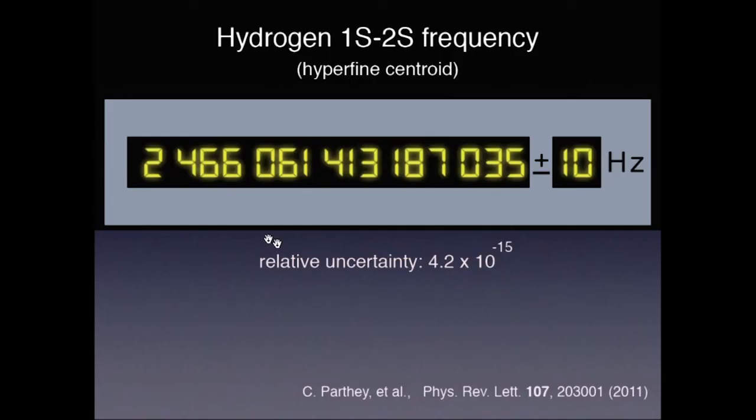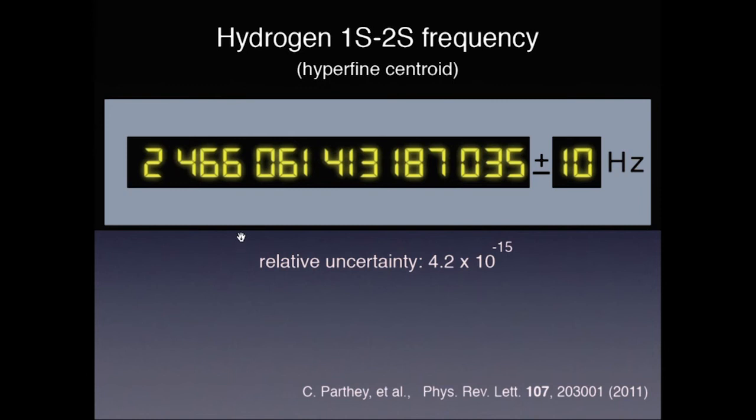They have measured this frequency now to a relative uncertainty of 4.2 times 10 to the minus 15. I am fairly confident that this can be improved another 10 or 100-fold. Why do we want to know it so well? One intriguing possibility would be to redefine the unit of time in terms of the simplest of the atoms, a hydrogen clock. If you can make measurements to that precision, you can ask if fundamental constants are constant or maybe slowly changing with time. There is still the question of symmetry between matter and anti-matter. I think it's now within reach within the next few years to do similar spectroscopic experiments with anti-hydrogen. Of course, if one wants to detect difference, one has to probably measure with very high precision.